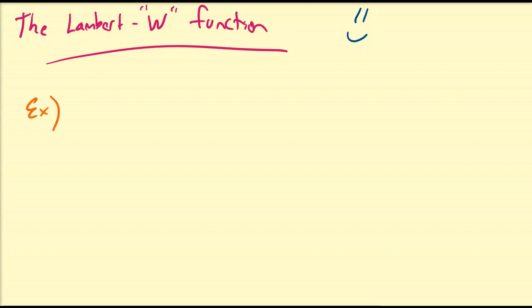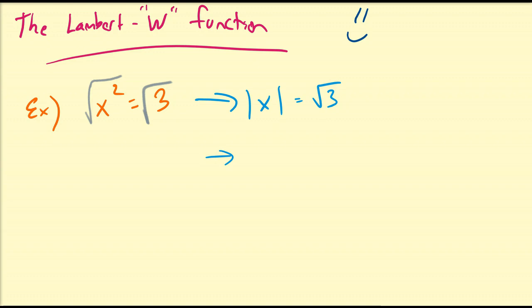Let us assume we want to solve the equation x squared is equal to 3. We need to know what number squared is equal to 3. So we construct the square root function such that once we take the square root of both sides of this equation, we get that the absolute value of x is equal to the square root of 3. This gives two solutions: x is equal to plus or minus the square root of 3, where the plus or minus is induced from the absolute value and not the quadratic term.